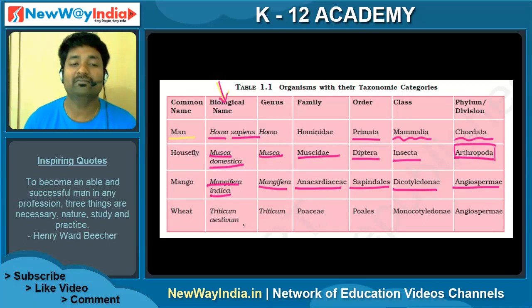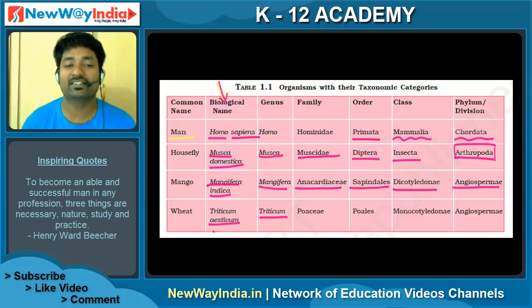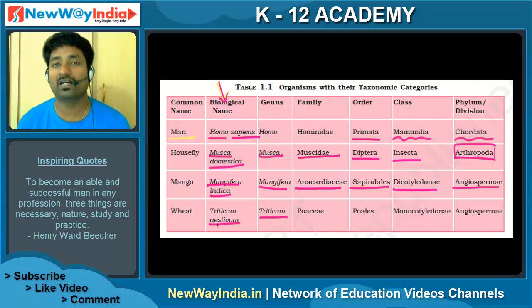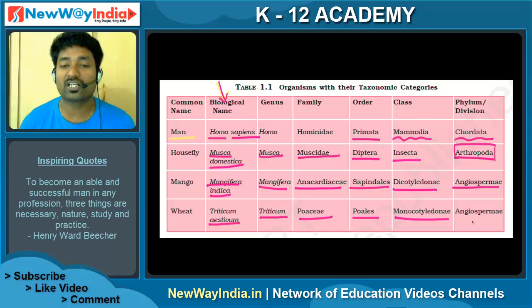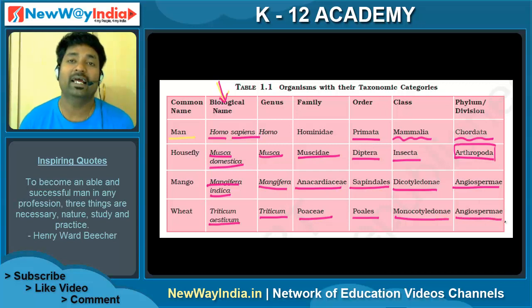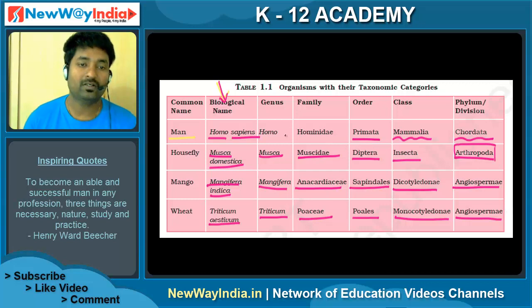Wheat: the scientific name is Triticum aestivum. Triticum is the genus and aestivum is the species, so the biological name is Triticum aestivum. The family is Poaceae, order is Poales, class is Monocotyledon, division is Angiospermia, and kingdom is Plantae.